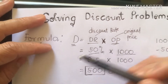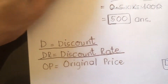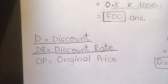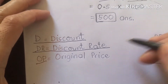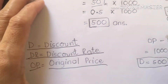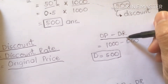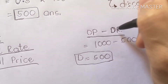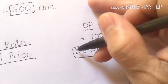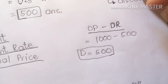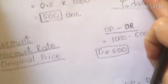Again, D is equal to discount. R is equal to discount rate. OP is equal to original price. Another formula: to find the payable amount, we subtract the discount from the original price, where R means discount rate, to get the particular discount.